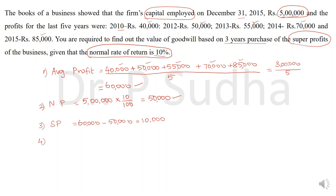After calculating super profit, the fourth step is to calculate goodwill. Goodwill equals super profit into number of years of purchase. The question gives 3 years purchase, so 10,000 multiplied by 3 gives goodwill of 30,000 rupees. Calculation of goodwill using the super profit method is also very easy — just follow it step by step.